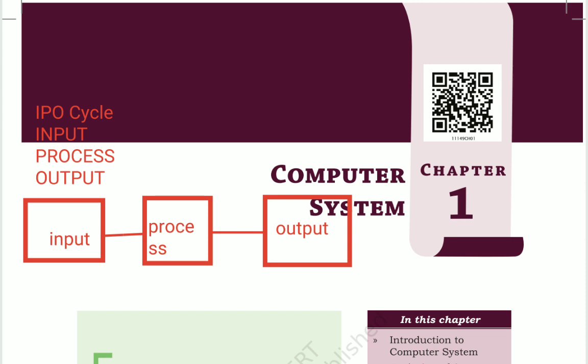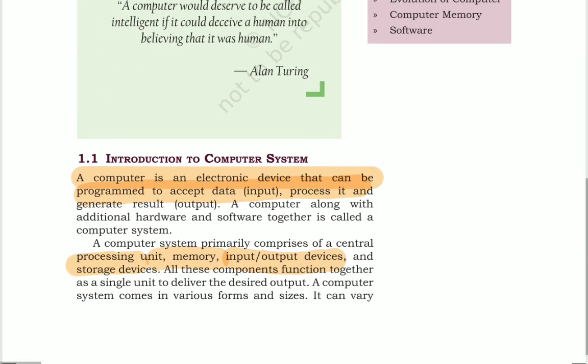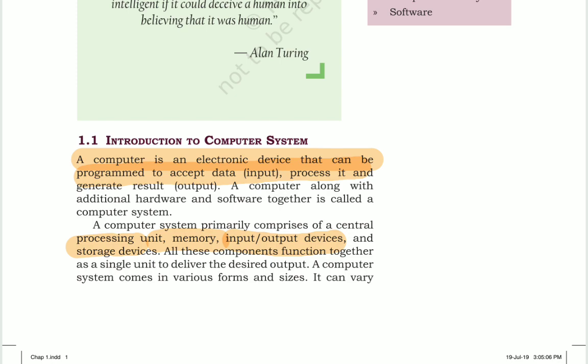Computer works with the help of the IPO cycle. IPO cycle means: I stands for input, P means process, and O means output. Input means taking input in the form of instructions and data, then processing that data and storing the result, and finally displaying the stored result or output data in print format.